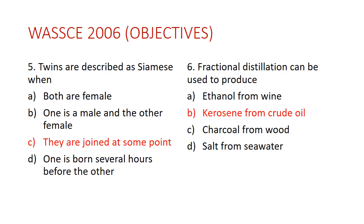Question six: fractional distillation can be used to produce A) ethanol from wine, B) kerosene from crude oil, C) charcoal from wood, D) salt from seawater. The answer is B — kerosene from crude oil. Crude oil is a mixture containing petrol, gas, butane, diesel, paraffin wax, and aviation fuel, all separated into components by fractional distillation, which separates a mixture based on differences in boiling points.